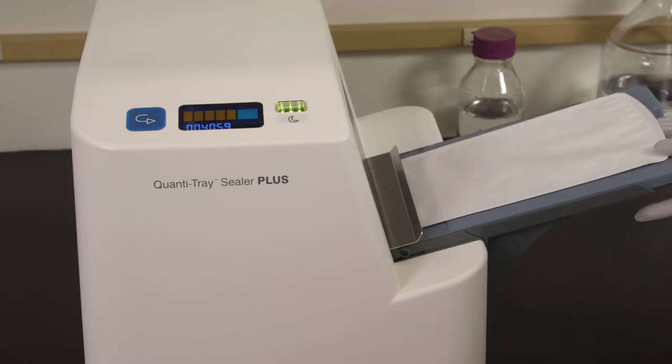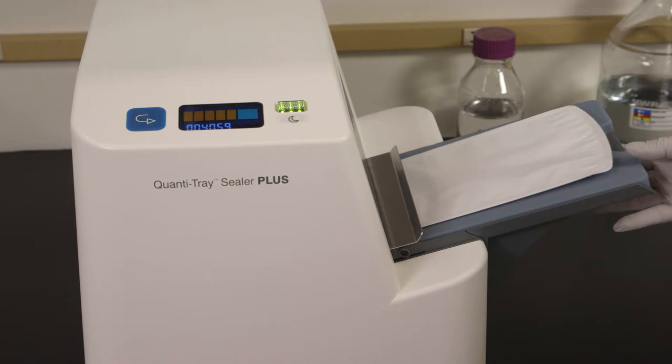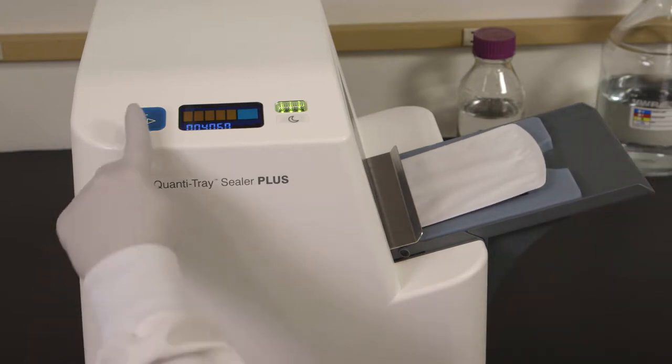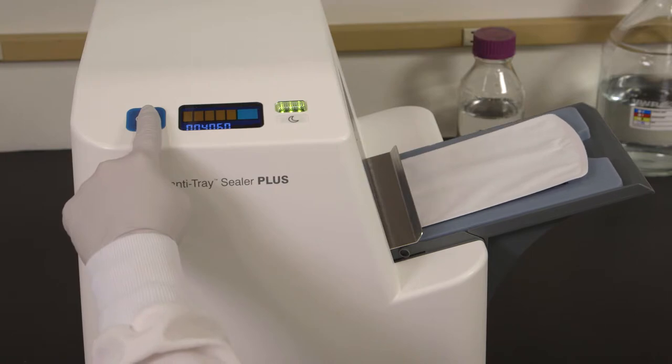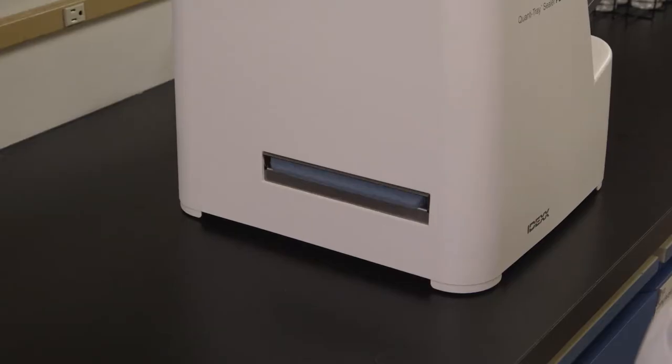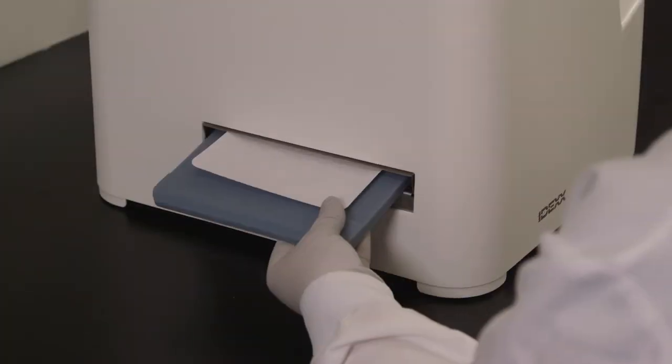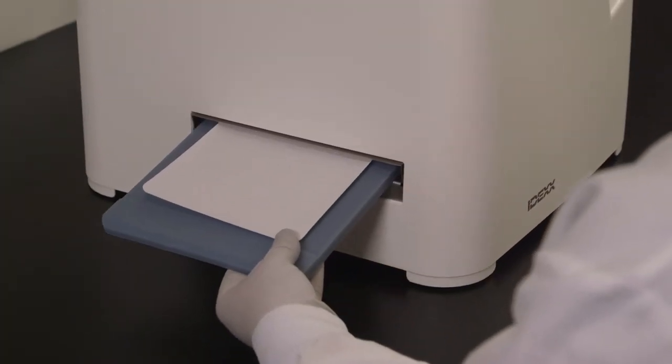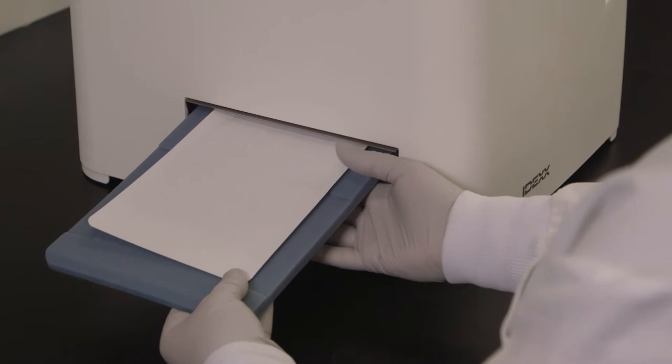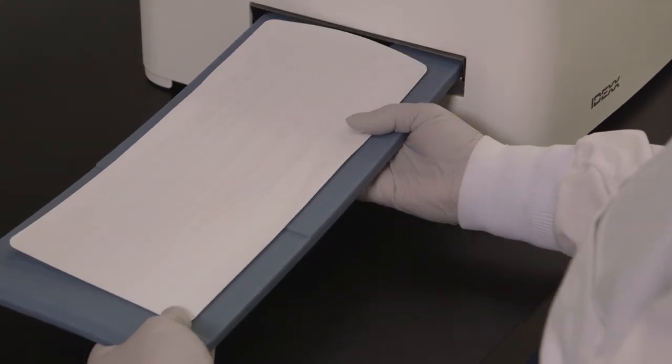If you need to reverse the motor, press and hold the reverse button. However, do not reverse the motor if the rubber insert is completely inside the sealer. The sealer distributes the sample mixture into the Quantitray LEG-ALERT wells, seals the wells, and partially ejects the sealed tray. Remove the rubber insert and tray from the sealer.